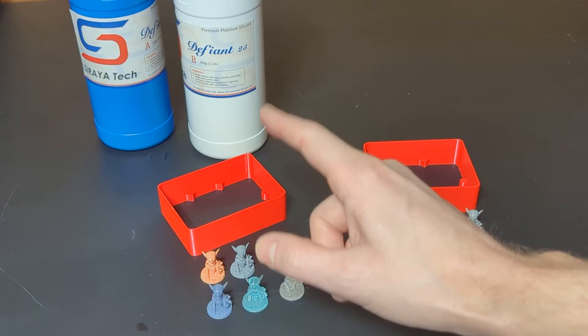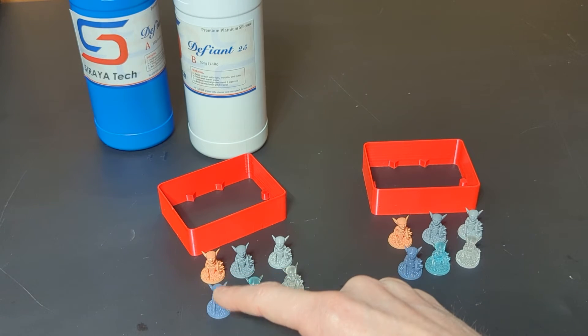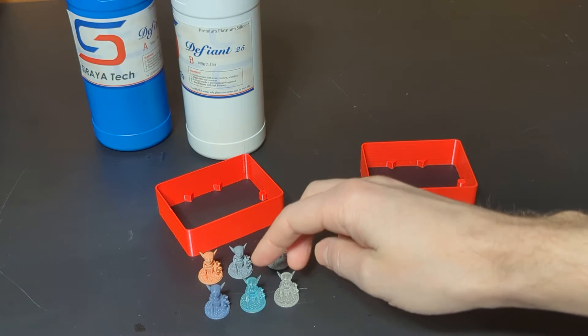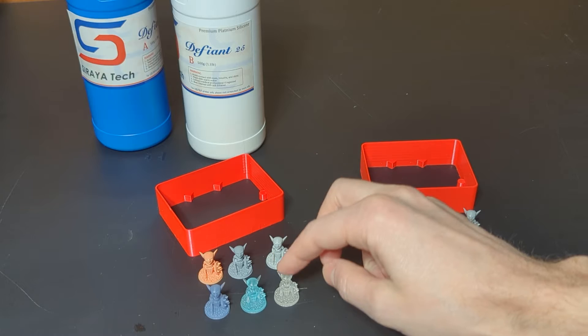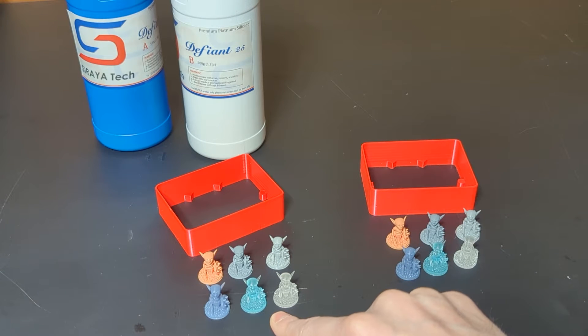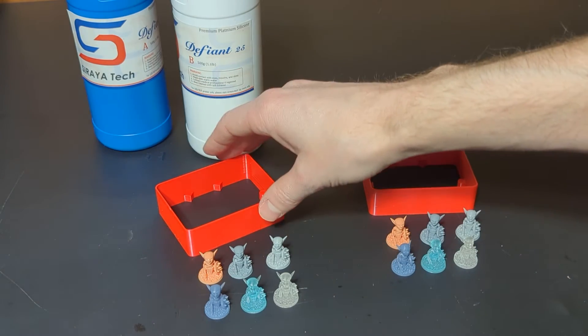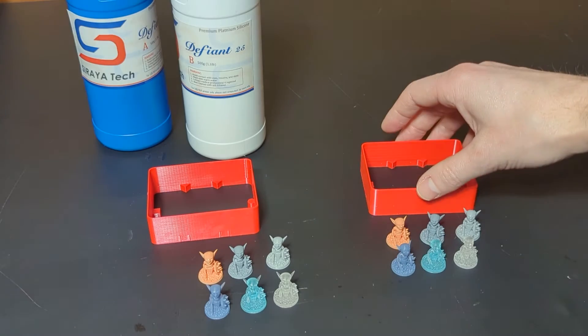And then these three are the ones that I expect shouldn't work, at least normally they won't. This is a mixture of Soraya Tech's Tenacious with their ABS-like Fast. These two are water washables by Resione, their Water Fairy line. So that's what we're going to do: Soraya Tech Defiant on the left, generic on the right.